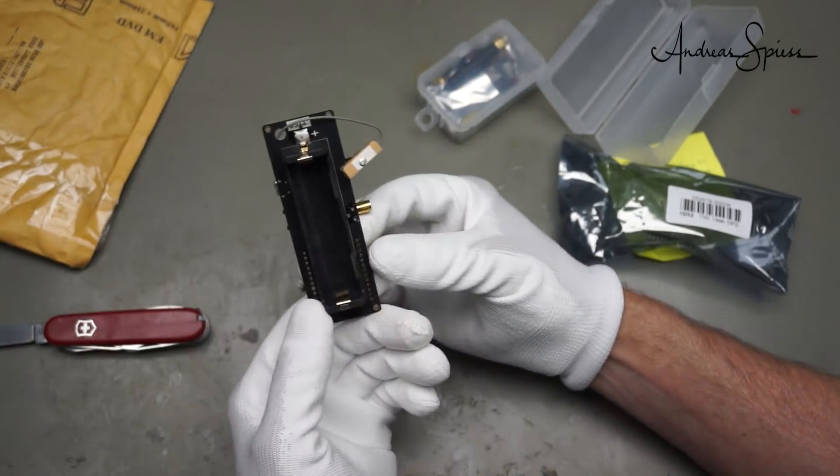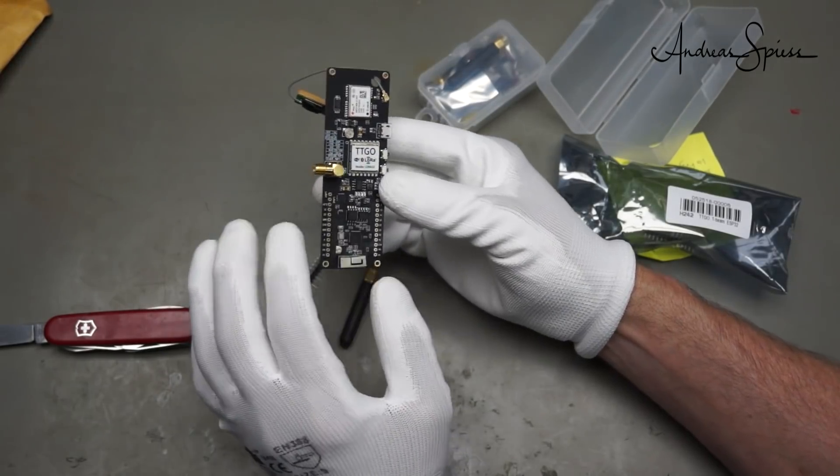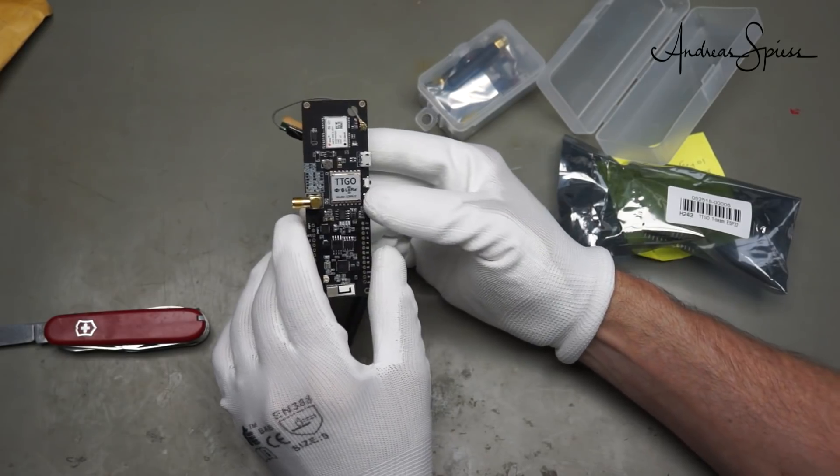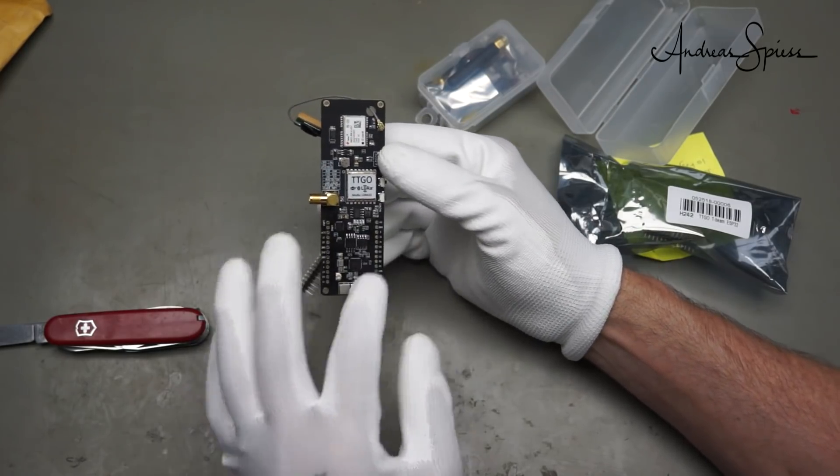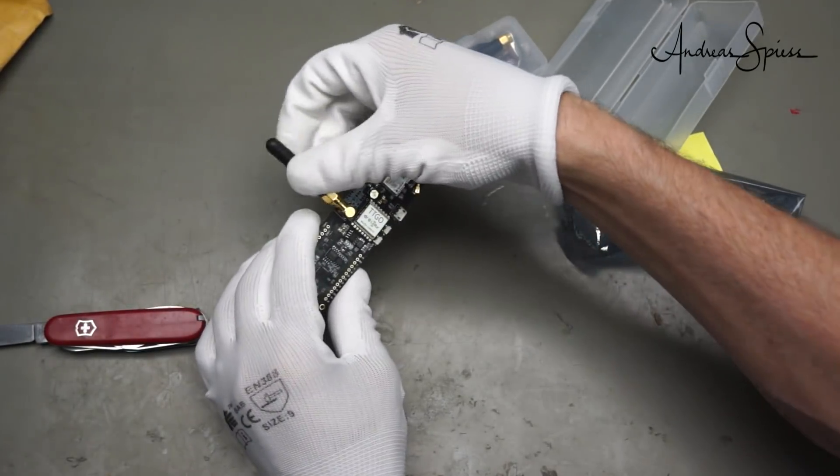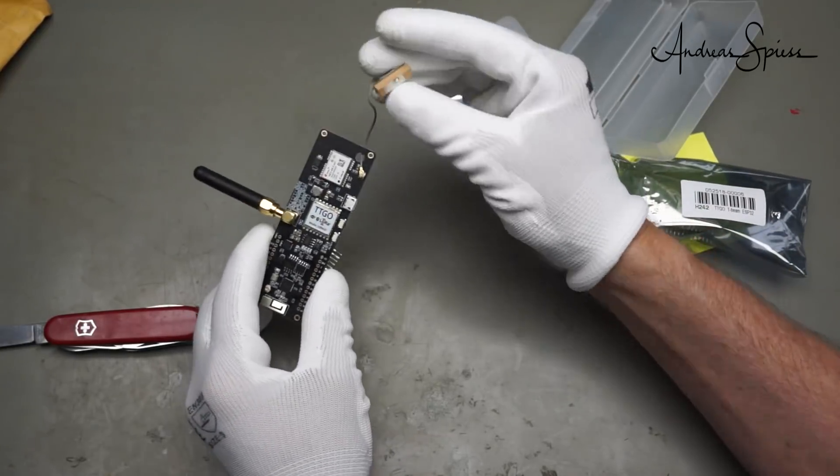Oh it is a LoRa module ESP32 and a GPS module. Never saw this. And a LiPo battery here. Very interesting device. I have to check how it can be used. Because I really do not have it in my selection. It looks good. And the LoRa antenna. And the GPS antenna.